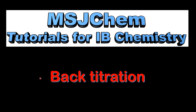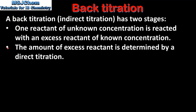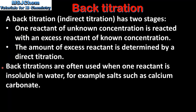This is MSJChem. In this video I'll be looking at the technique of back titration. A back titration or indirect titration has two stages. In the first stage, one reactant of unknown concentration is reacted with an excess reactant of known concentration. In the second stage, the amount of excess reactant is determined by a direct titration.